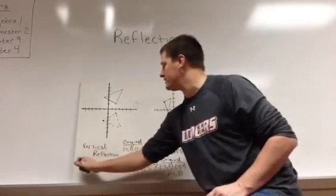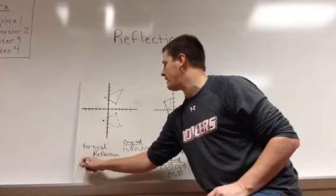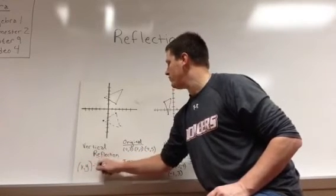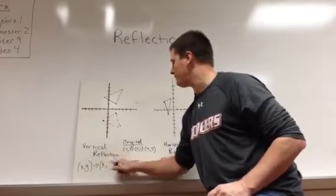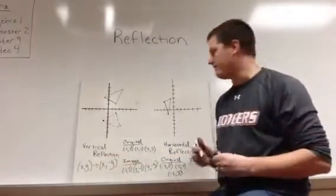So vertical reflection takes us from x, y to x, negative y. So we just do the opposite of the y value.